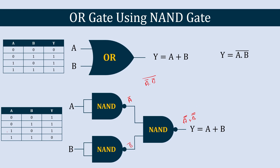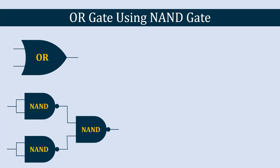Let's verify: if A = 0 and B = 1, the OR gate output should be 1. With A = 0, Ā = 1; with B = 1, B̄ = 0. The inputs to the final NAND gate are 1 and 0, and the NAND gate output for that combination is 1, which matches the OR gate output. Therefore this logical combination represents the equivalent circuit of an OR gate created using NAND gates.